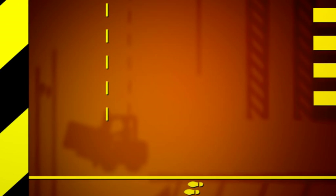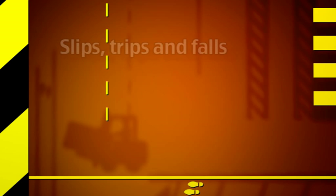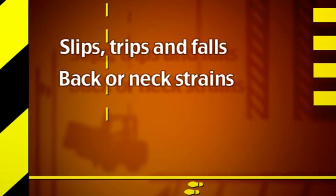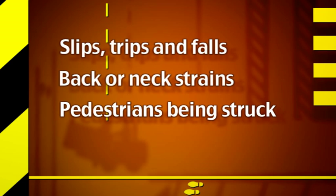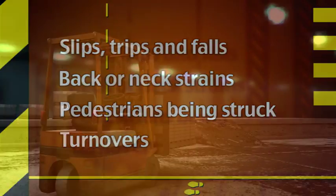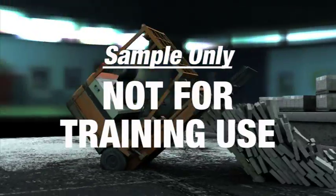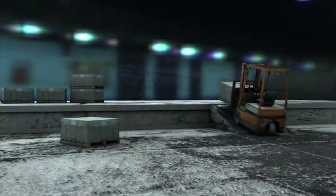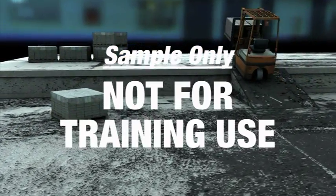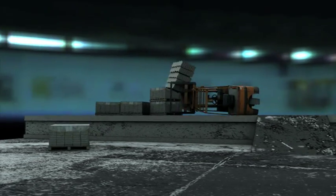Common accidents involving forklifts include slips, trips and falls when getting on and off, back or neck strains suffered while driving, pedestrians being struck by a moving forklift or a forklift's load, and turnovers. Turnovers, where the forklift falls either forward or sideways, are the biggest risk to forklift operators with the potential for serious injury or death.